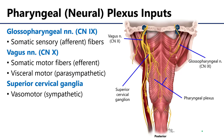The pharyngeal neural plexus has three major inputs: the glossopharyngeal nerve (cranial nerve 9), the vagus nerves (cranial nerve 10), and the superior cervical ganglia of the sympathetic trunks.